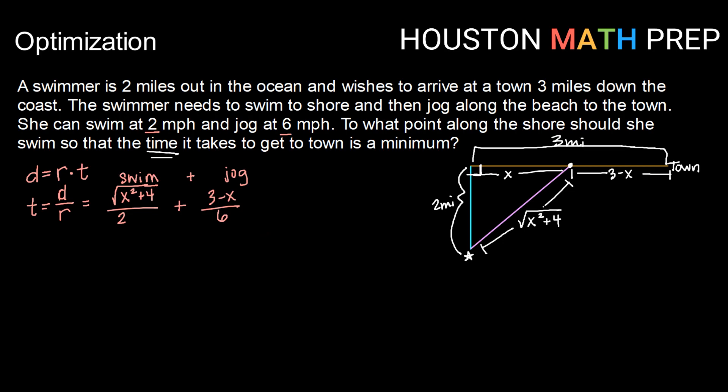So here we have a function of time in terms of this distance x that she needs to land along the shore. So if we want to minimize that, we need to first figure out what's a reasonable interval that we're working with. And second, are there any critical points on that interval? So here our variable is x. So thinking about an interval for x.